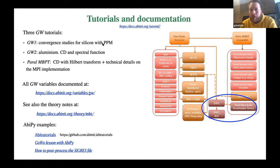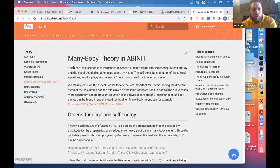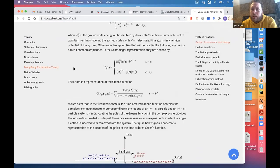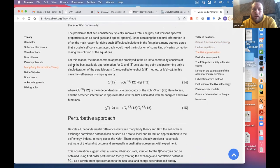I suggest you start from this lesson during the hands-on session. The second lesson is more advanced: it treats a metal, aluminum, and shows how to compute the self-energy and spectral function using the contour deformation technique. There's also another lesson discussing technical details related to parallelism and the Hilbert transform method, which is much better than the Adler-Weiser expression when computing several frequencies. All variables are documented on the website and I suggest reading these theory notes, which establish a connection between the equations and the internal implementation.